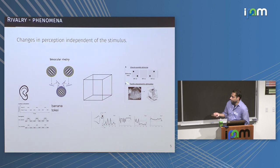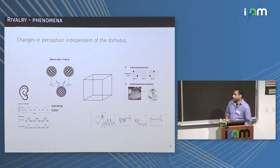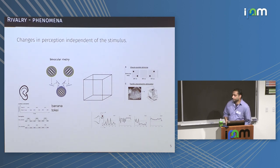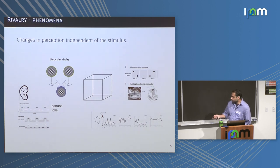Many of you may have seen this before — look at this 2D drawing. The first thing you notice is that it's really hard to see the 2D representation; you end up seeing a 3D projection. And as you keep watching it, you'll see that the orientation of this cube changes over time. This is profound — the stimulus is a very simple image. Everything that's happening is happening in your brain.